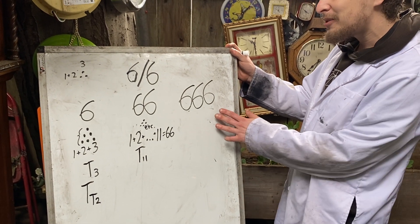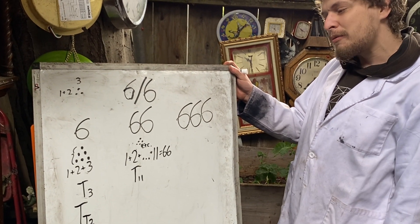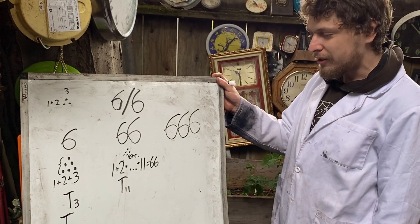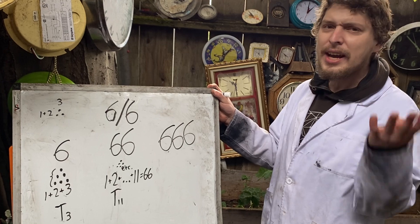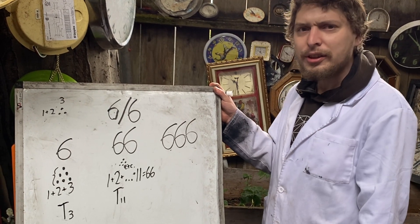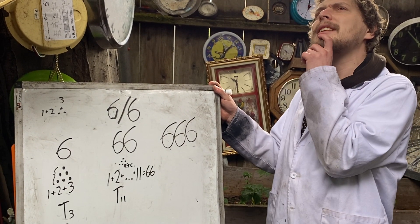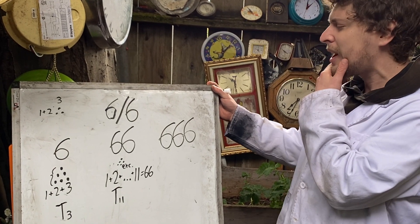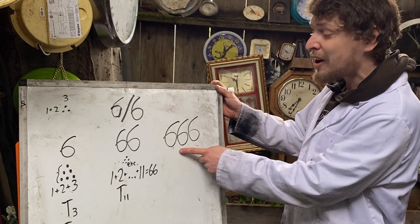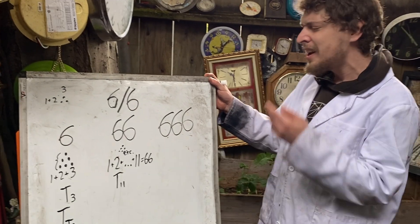Now what about 666? It would seem pretty remarkable if they continued being triangular numbers, because in fact, 6666 isn't a triangular number. It's pretty close. I think 6670 or something is a triangular number, but 6666 is not.